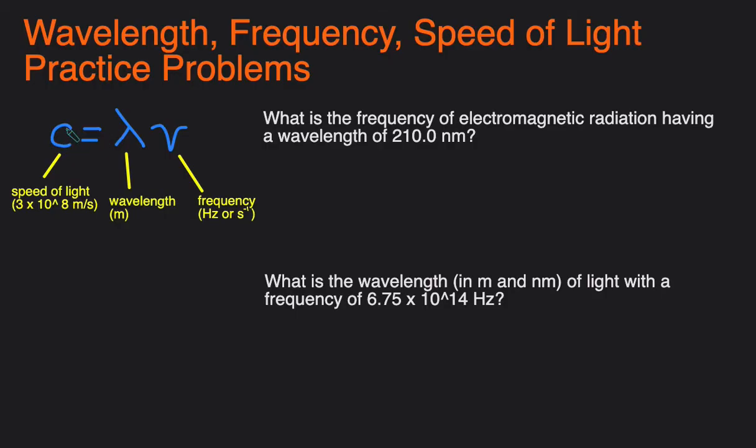So let's start with the equation. The equation is C equals lambda times nu. C stands for speed of light and it's a constant that equals 3 times 10 to the 8th meters per second. Sometimes you might also learn it as 2.99 times 10 to the 8th meters per second, but pretty much 3 times 10 to the 8th meters per second.